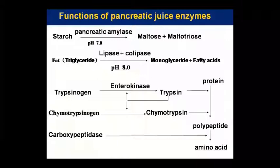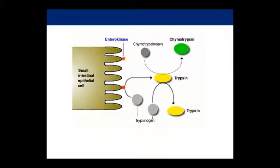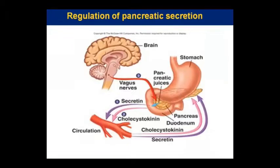This function is called pancreatic juice. There are enzymes in the small intestine epithelial cells. Enterokinase is released, chymotrypsinogen is broken into chymotrypsin, and trypsinogen is broken into trypsin.